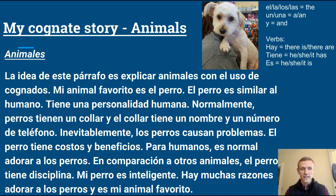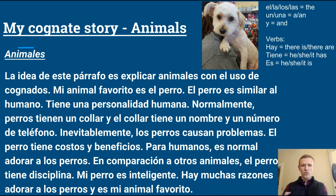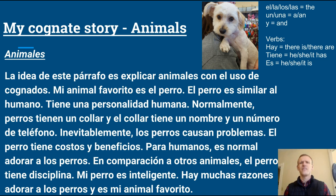Hopefully you were able to pick up on most of that. I challenge you to make your own story or paragraph about any topic you want, and start to use that list of cognates you're finding online to put something together. Not only are you practicing with those three very common verbs, but you're also putting cognates together. You can pick up on different verbs too — like 'causan,' meaning 'they cause,' or 'adorar.' It was actually harder to do than I thought, so it is a challenge. Take your time, put together a good list of cognates, make a paragraph, and send it in the comments section below.